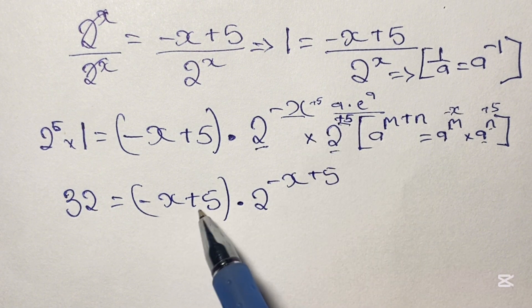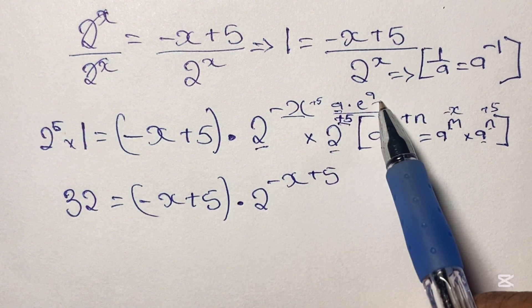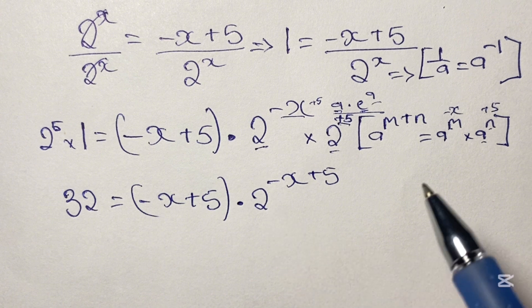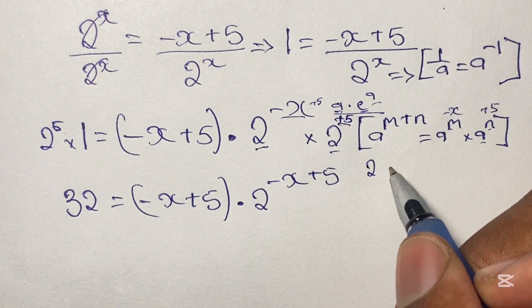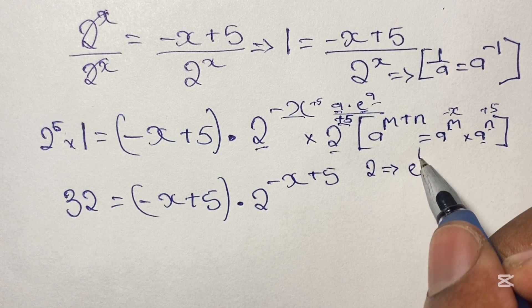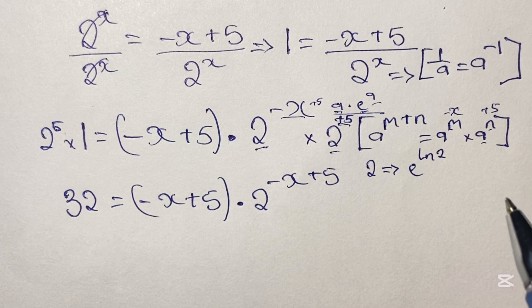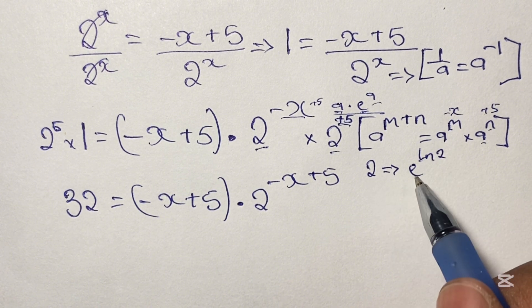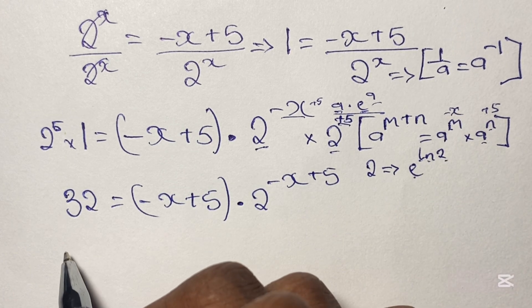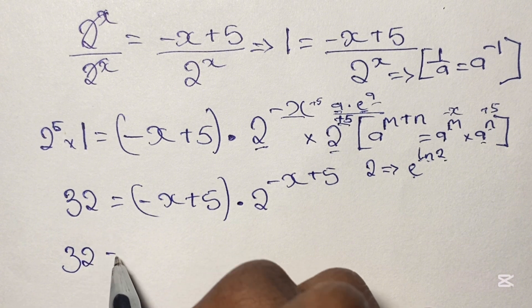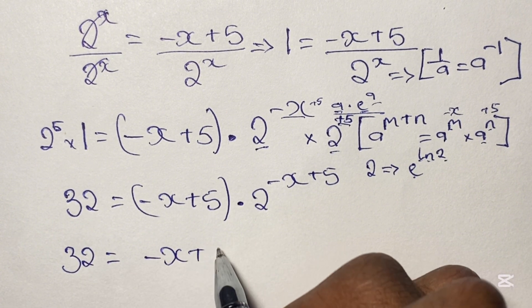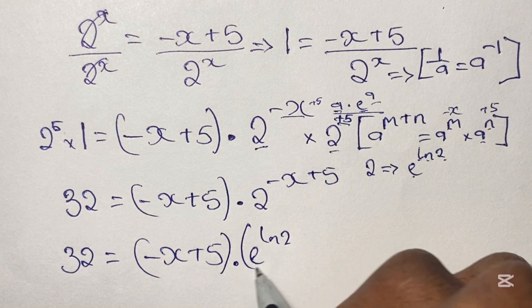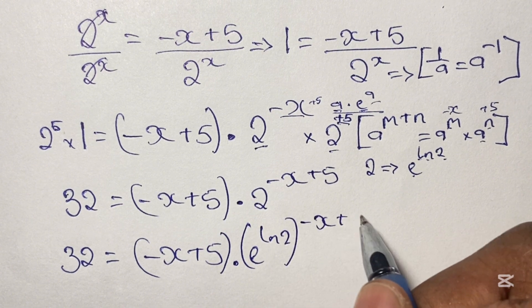Now we have negative x plus 5 both as a factor and in the exponent — that's our a — but we need the base to be e, not 2. Writing 2 in the form of e, we have 2 equals e to the power of ln 2. Since ln cancels with e, the result is just 2. So we rewrite our equation as 32 equals negative x plus 5 in brackets, times e to the power of ln 2, in brackets, raised to the power of negative x plus 5.